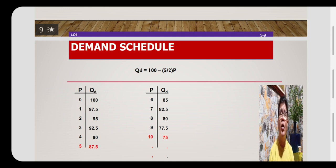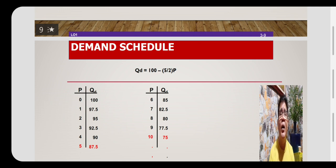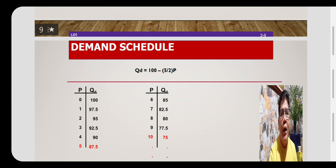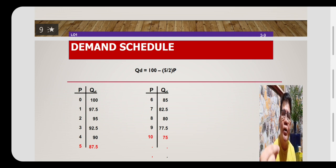Every time we increase price by 1 peso, quantity demanded decreases by 2.5. So when the price is 2 pesos, quantity demanded is now 95. Originally it was 97.5 when price was 1. There is a decrease in quantity of 2.5 for every 1 peso increase in price. The first table shows price increasing by 1 peso each time.